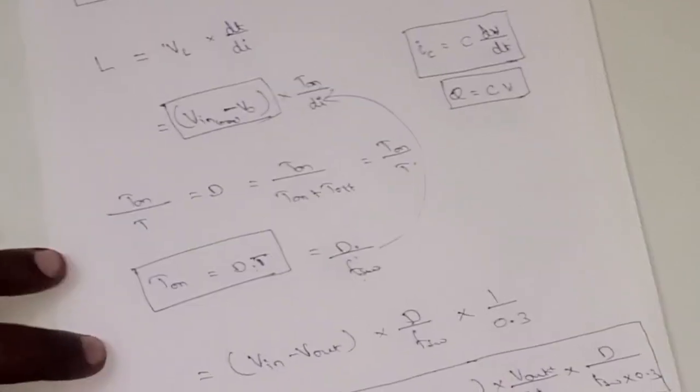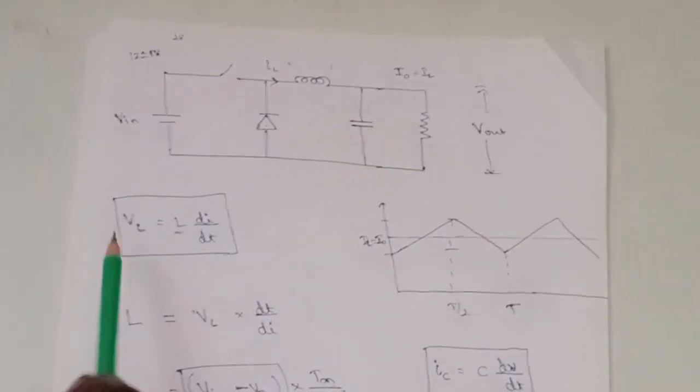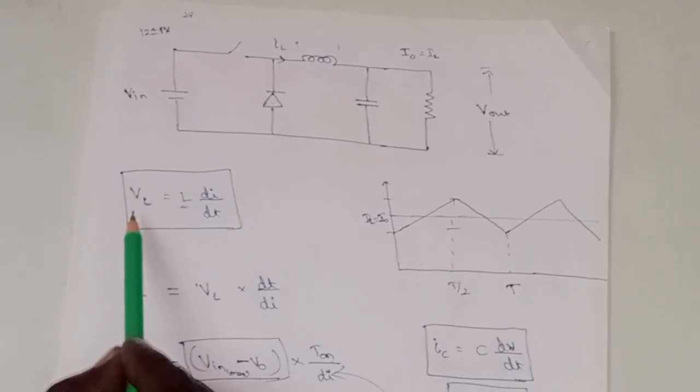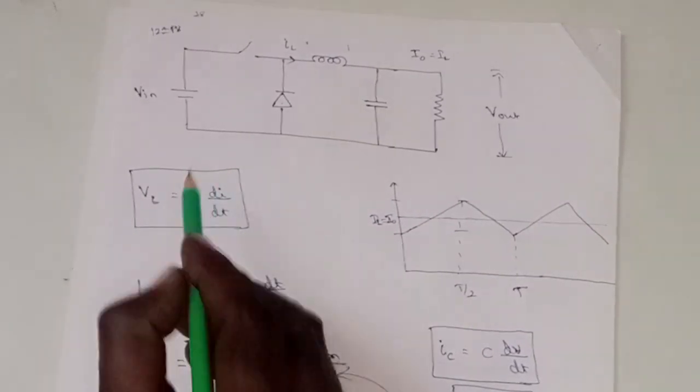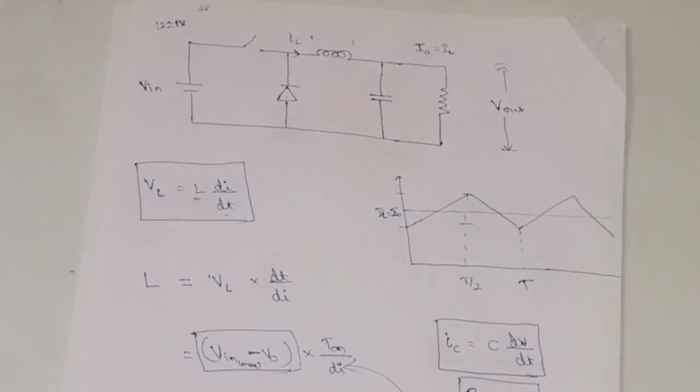And I will repeat once again: whenever you find the inductor value, remember this formula. Voltage across the inductor will be L into di by dt. Thanks guys, thanks for watching this video.